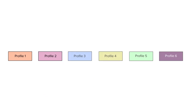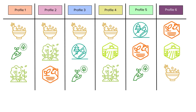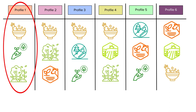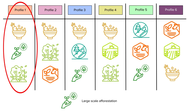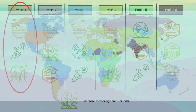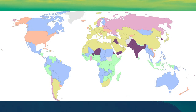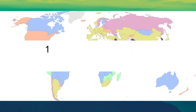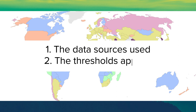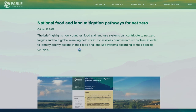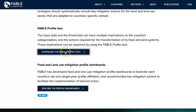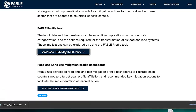These profiles will determine the priority actions. For example, if we look at a country in profile 1, its priority actions are to reduce and avoid excessive consumption, conduct large-scale afforestation, and restore former agriculture land. However, a country's allocation to a profile is determined highly by the data source used and the thresholds applied. The implications of different input data and/or threshold choices on the country allocation to the profiles can be tested in the FABLE profile tool.